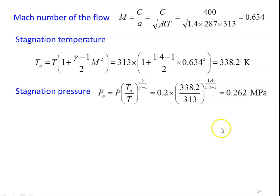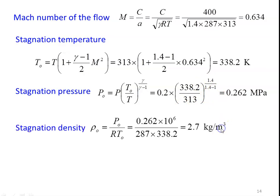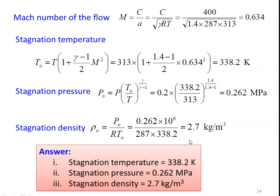Stagnation temperature: T₀ = T × [1 + (γ-1)/2 × M²] = 313 × [1 + (0.4/2) × 0.634²] = 338.2 K. Stagnation pressure: P₀ = P × (T₀/T)^(γ/(γ-1)) = 0.2 × (338.2/313)^3.5 = 0.262 MPa. Stagnation density: ρ₀ = P₀/(R × T₀) = (0.262 × 10⁶)/(287 × 338.2) = 2.7 kg/m³. Answers: T₀ = 338.2 K, P₀ = 0.262 MPa, ρ₀ = 2.7 kg/m³.